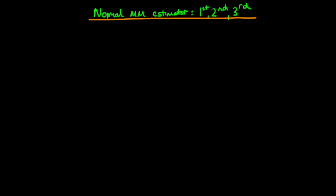In this video I want to talk about how we can come up with method of moments estimators using the first, second, and third central moments of a normal distribution. The population here is a normal distribution which has got two parameters, mu and sigma squared.